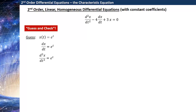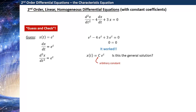Let's just take the first and second derivatives. Well, the first and second derivatives just give me e to the t back. So if we plug this into our differential equation, the first term gives me e to the t, the second term gives me minus 4 e to the t, and the third term gives me plus 3 e to the t. It turns out that all of these terms are going to cancel on the left-hand side. So I get 0 is equal to 0 — it worked! This guess, x of t equal to e to the t, turns out to be a solution to this differential equation.